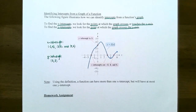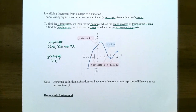This finishes our discussion on graphing functions, the vertical line test, and obtaining information from a graph of a function. If you have any questions about the examples in this video or while working on the homework, please let me know. I'll see you at the next video when we talk about increasing, decreasing, and constant intervals, as well as relative extrema of a function's graph.